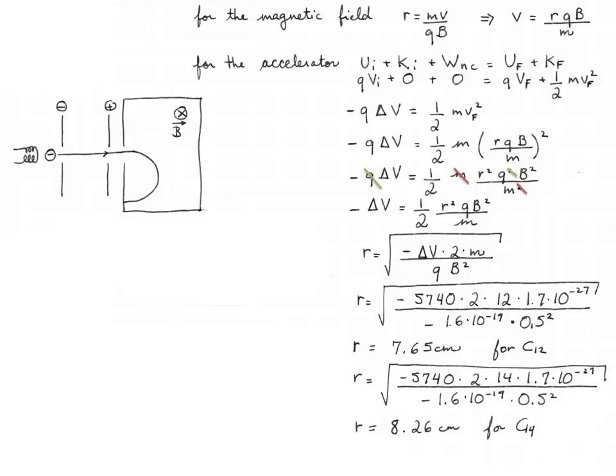For carbon-14: the square root of negative 5740 times 2 times the mass of carbon-14, which is 14 times the atomic mass unit (14 × 1.7 × 10⁻²⁷ kg), divided by negative 1.6 × 10⁻¹⁹ coulombs times half a Tesla squared, gives 8.26 centimeters.